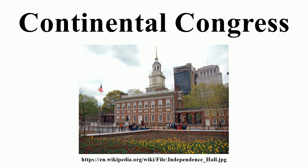The First Continental Congress met briefly in Carpenters Hall in Philadelphia, Pennsylvania, from September 5 to October 26, 1774. It consisted of 56 delegates from 12 of the 13 colonies that were to become the United States of America.